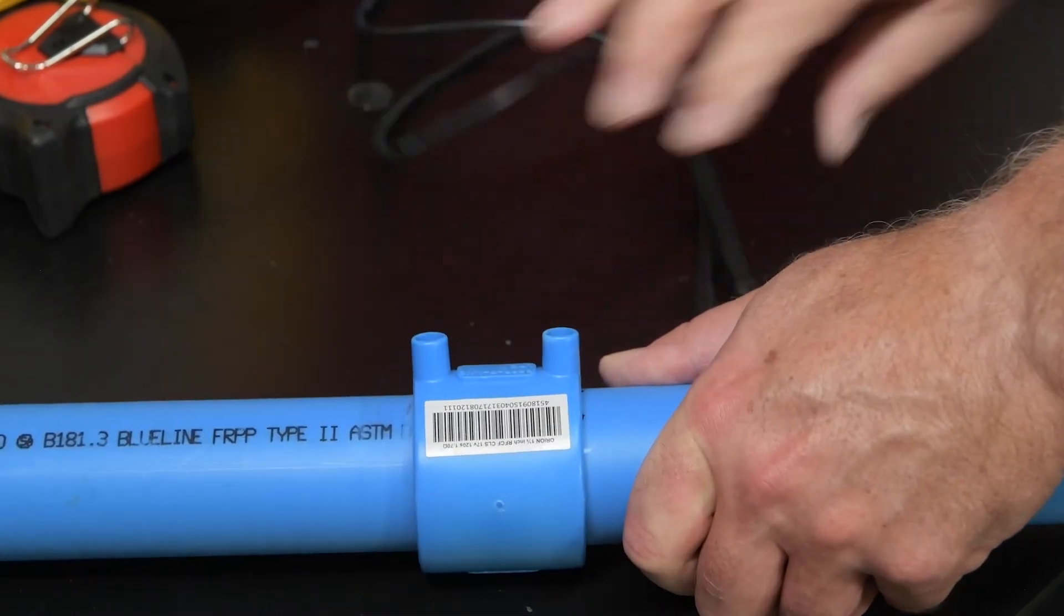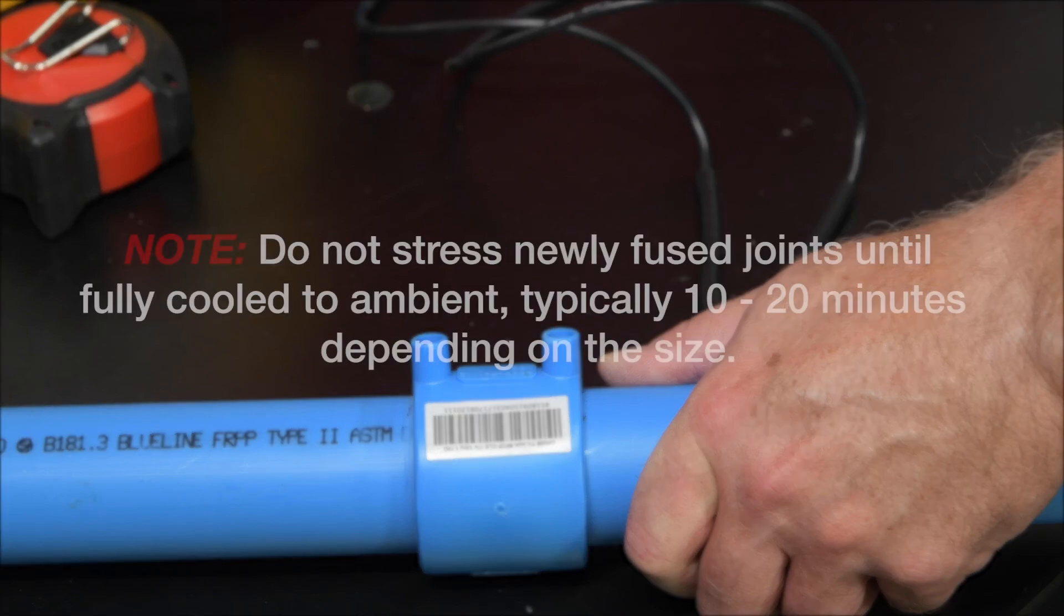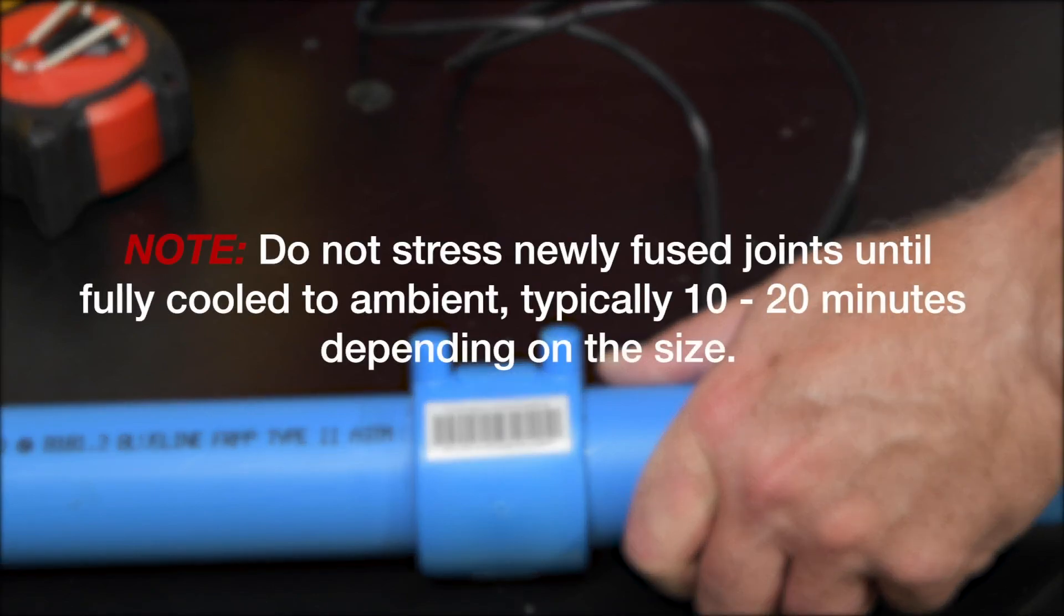Remove the lead cables and mark the fused coupling with the fusion number from the machine. Note, do not stress newly fused joints until fully cooled to ambient, typically within 10 to 20 minutes depending on the size. A successful weld completion screen does not eliminate the need for system leak testing.